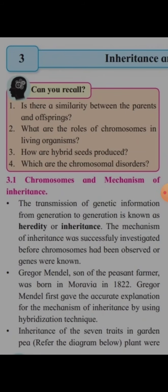Gregor Mendel was the son of a peasant farmer and was born in Moravia in 1822. He was the first one to give an accurate explanation for the inheritance mechanism, and he used hybridization methods or techniques for the explanation of this concept.